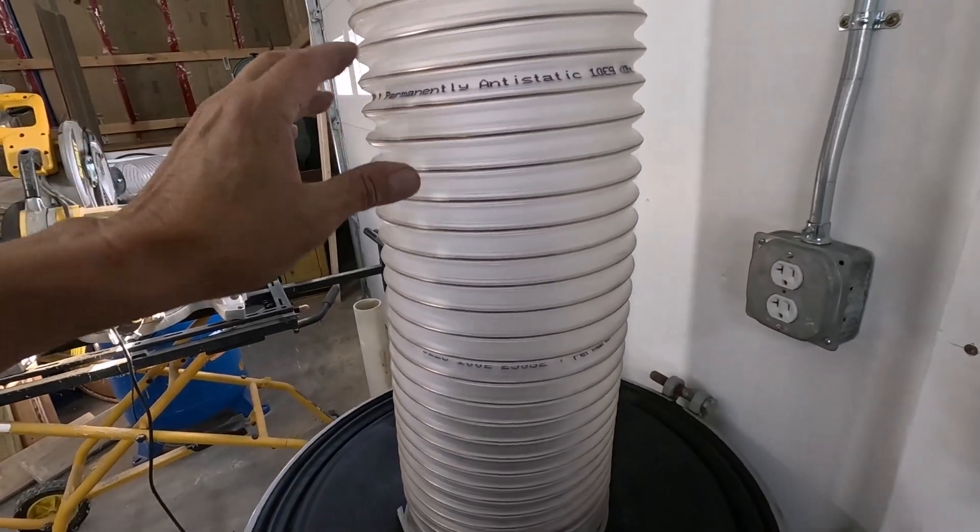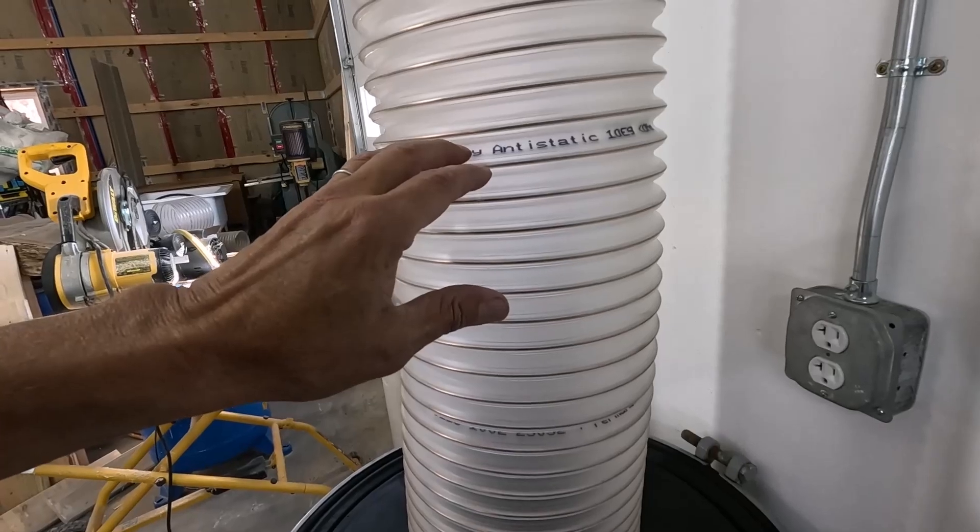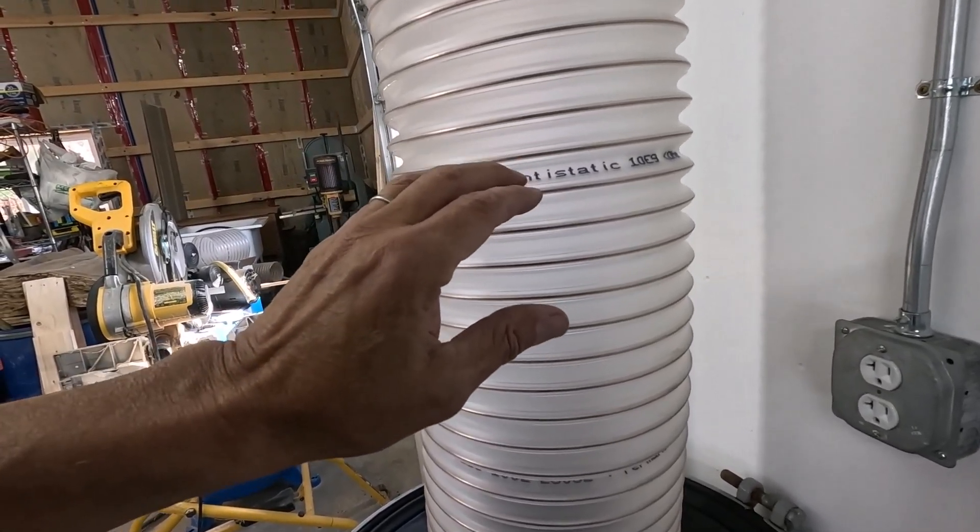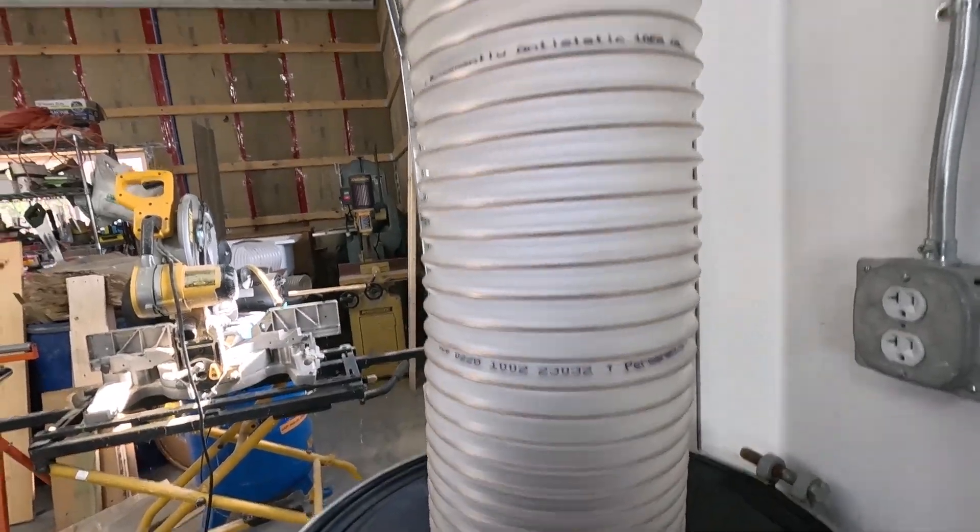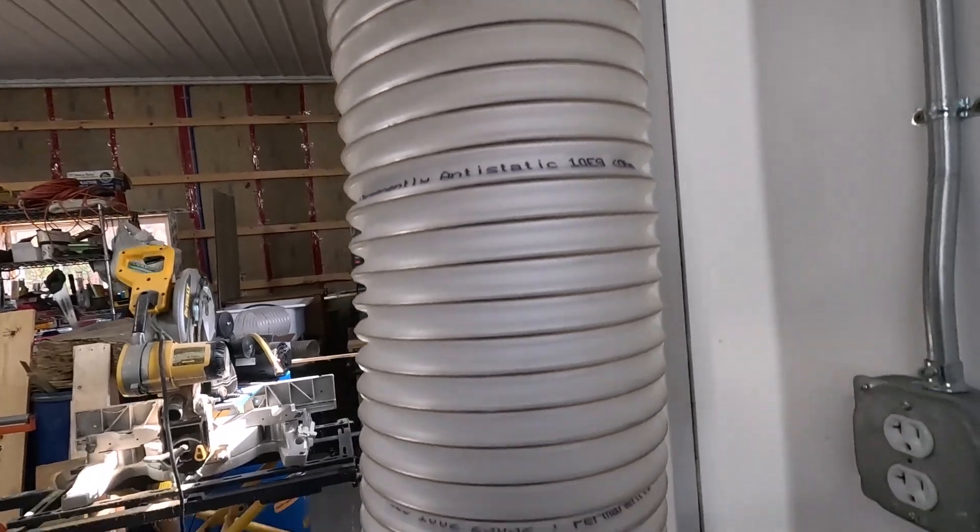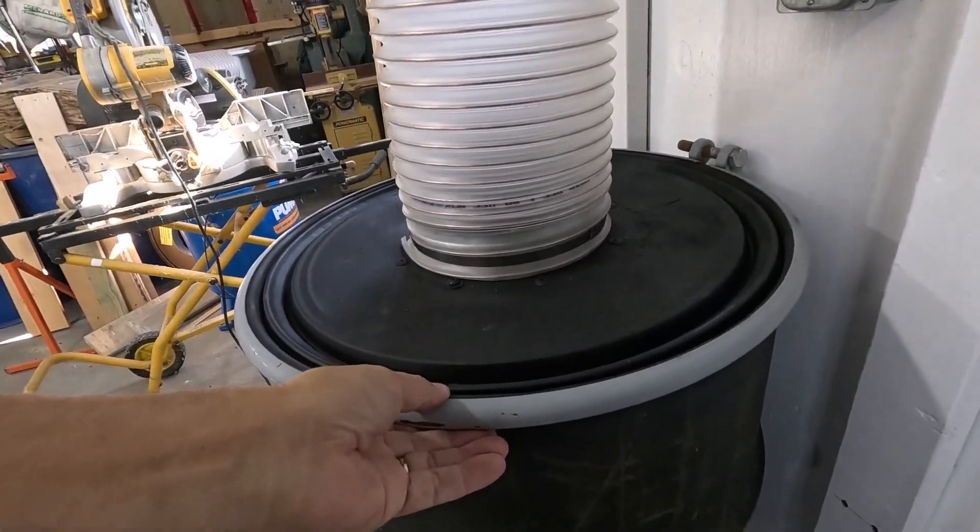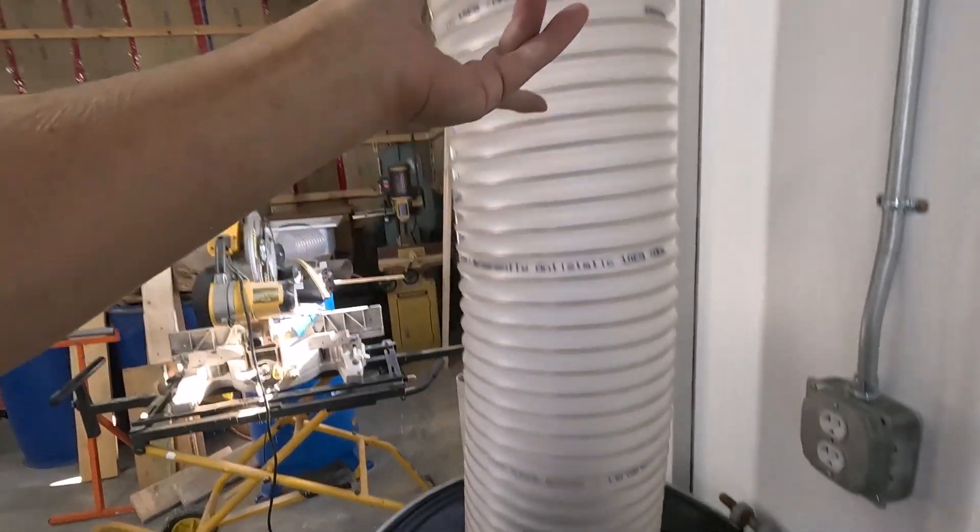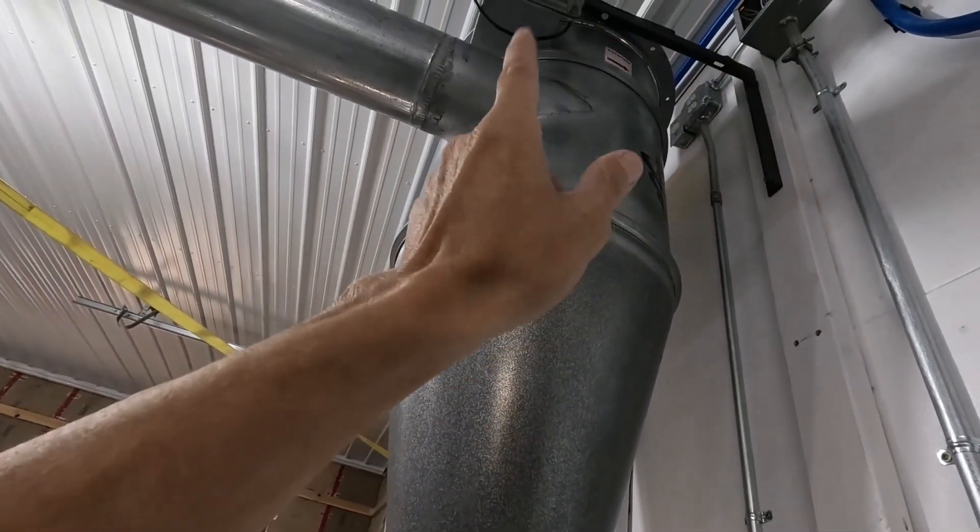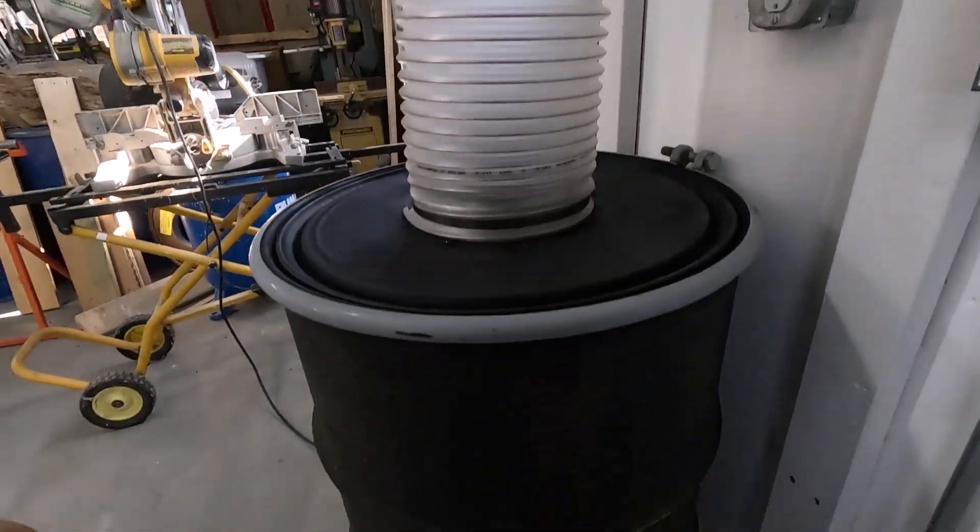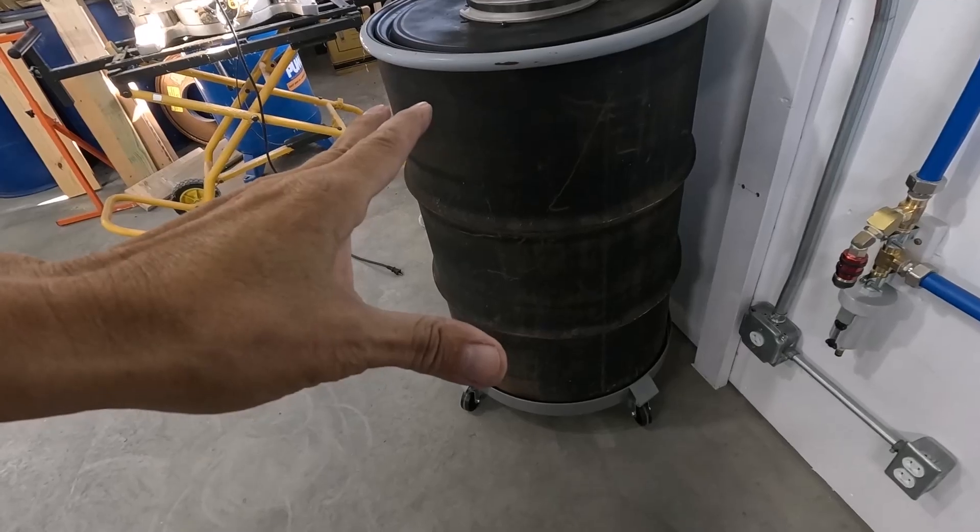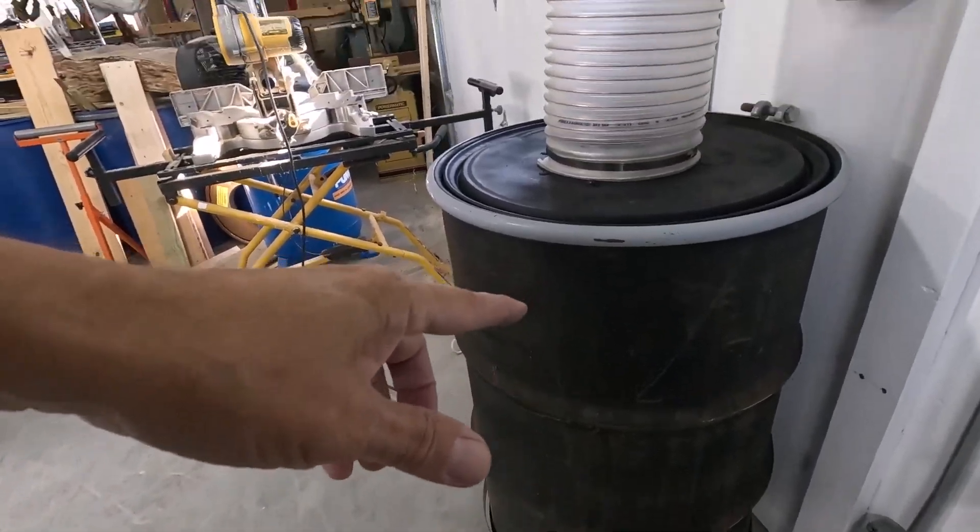Even though this is anti-static right here, this is going to shed its static electricity to either the barrel or to the cyclone. You would hope that any static electricity that builds up in the drum would work its way up and into the ground that I'll be putting in up there, but this just assures that the drum is always grounded. It's cheap insurance.